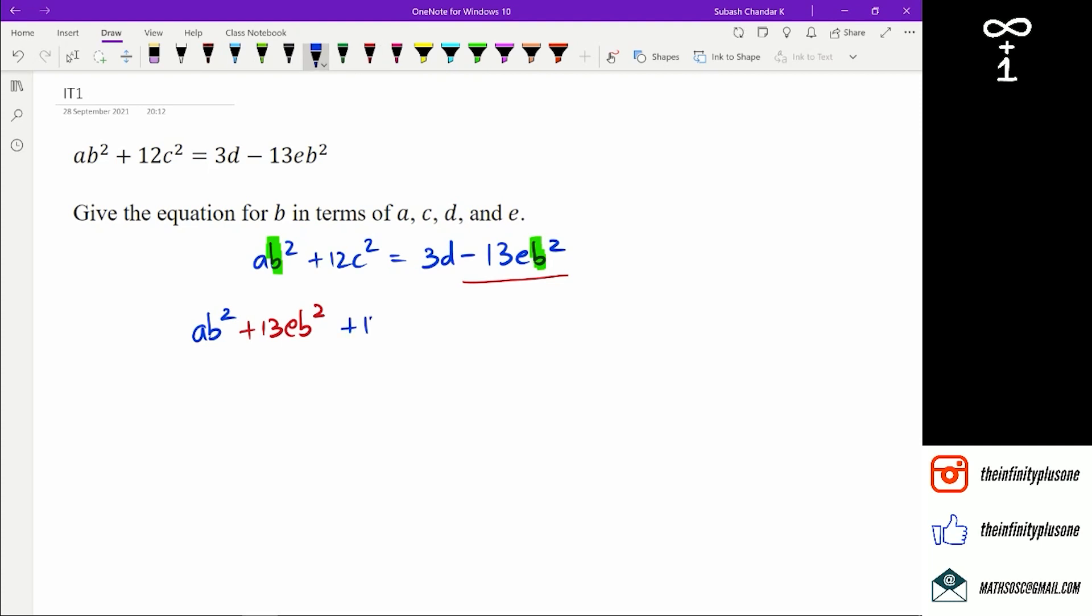Now I'm going to get rid of the 12c² to the right hand side. So I've got ab² plus 13eb² equals 3d. And that's, of course, going to become minus 12c².